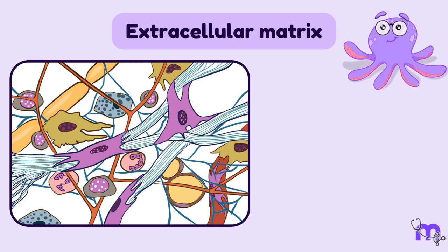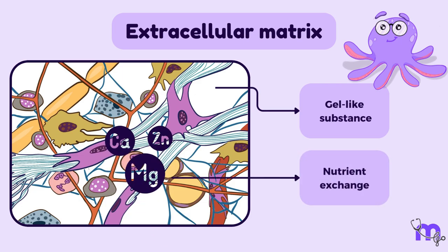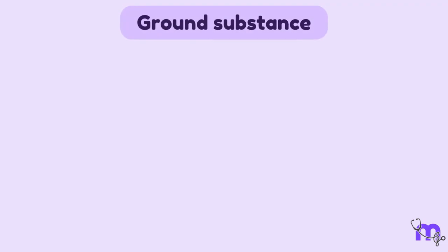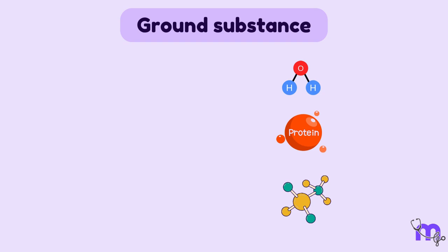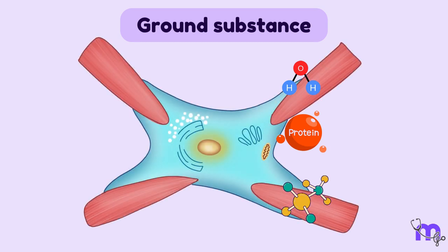The ground substance is a gel-like substance that surrounds the cells and provides a medium for nutrient exchange, especially between the blood and surrounding cells. The primary component of the ground substance is water, along with proteins and carbohydrate complexes. These are secreted by cells called fibroblasts, which we will learn about in just a little bit.